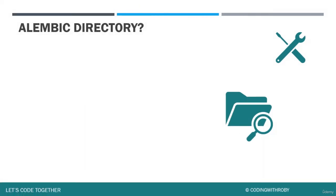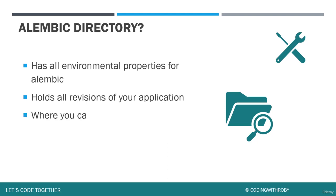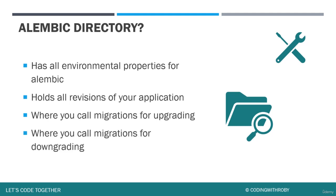The Alembic directory is where we do all the magic. It has all the environmental properties for Alembic, holds all the revisions for our project, and it's the area we call for migrations when upgrading and downgrading.